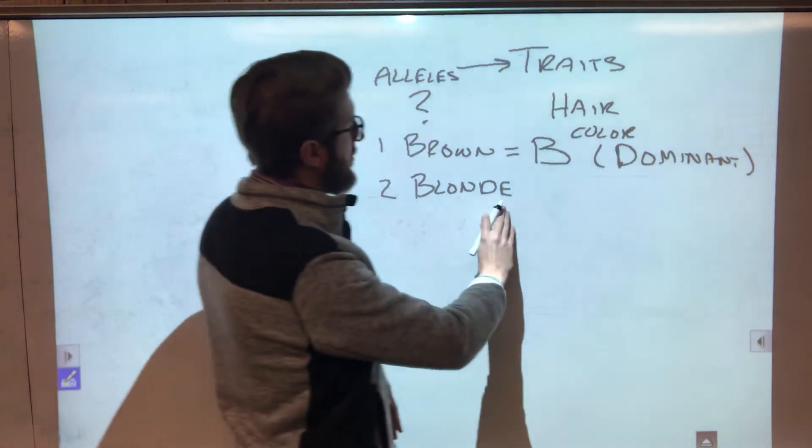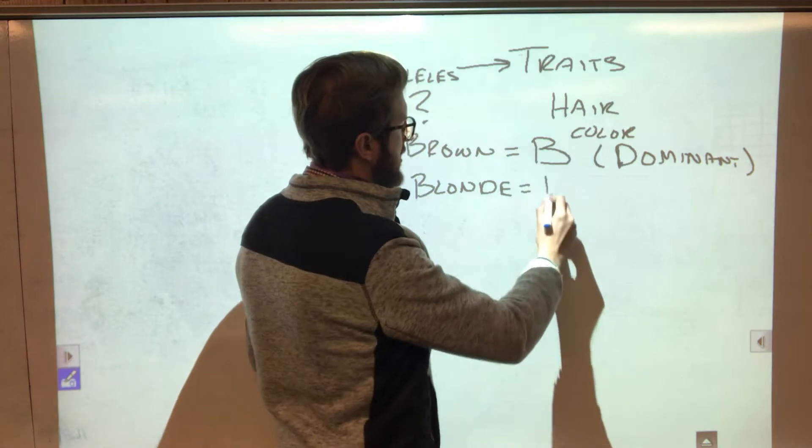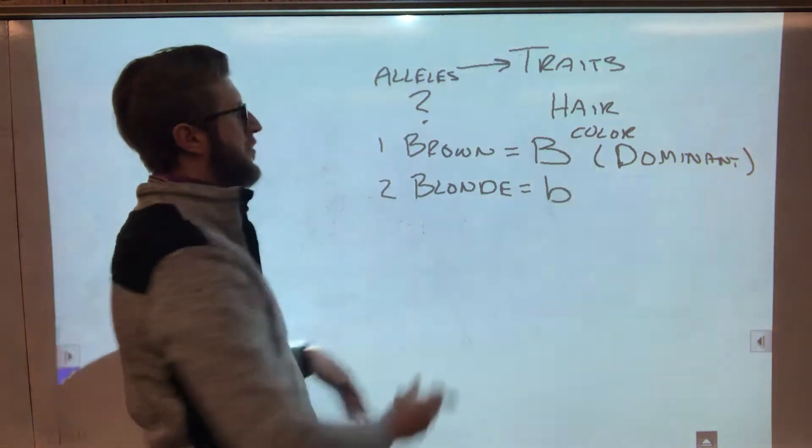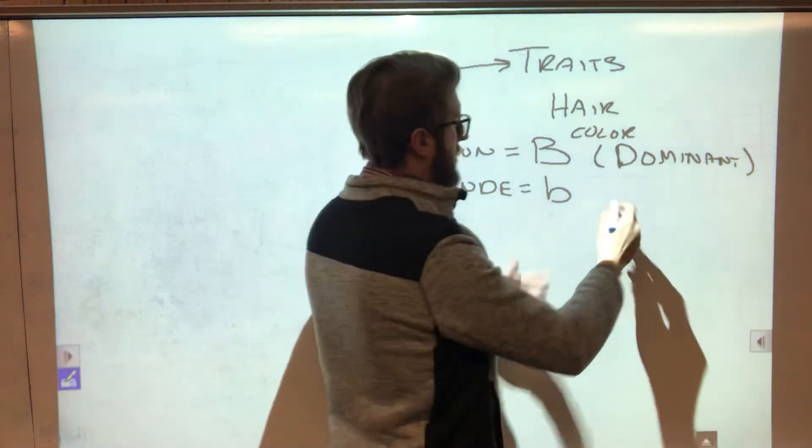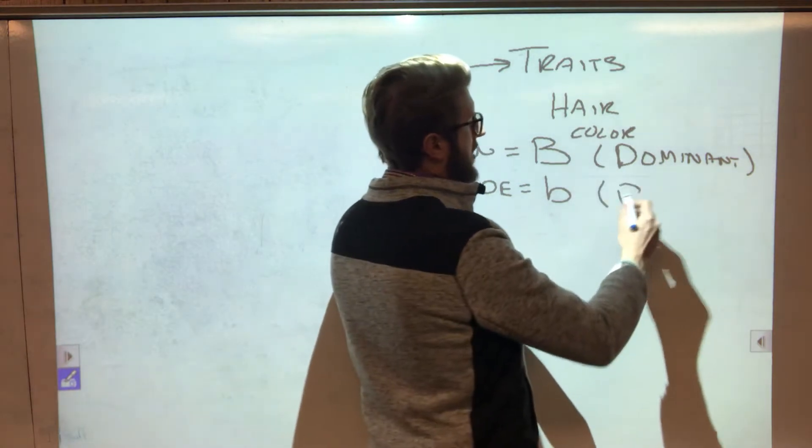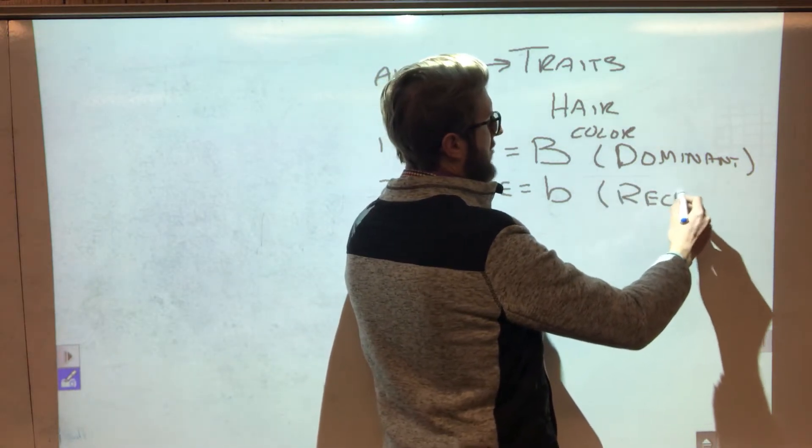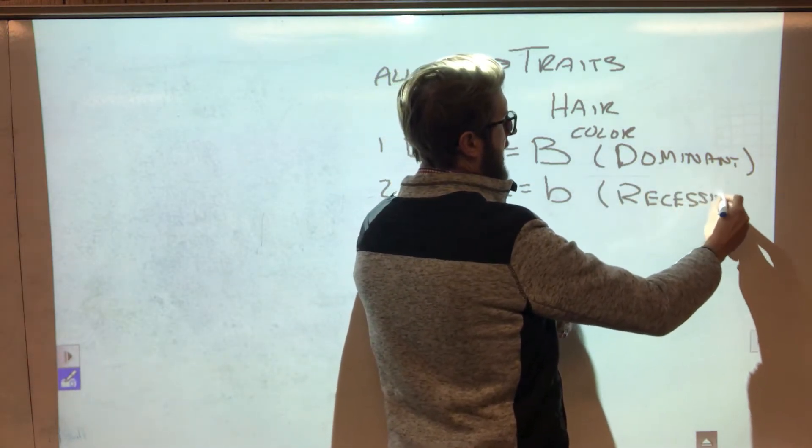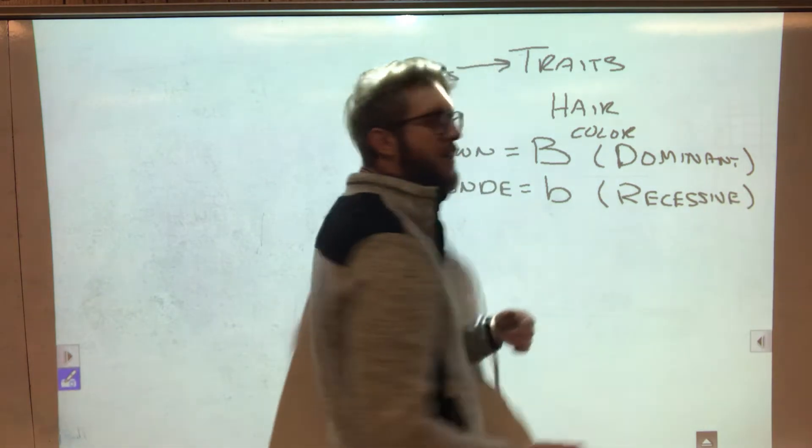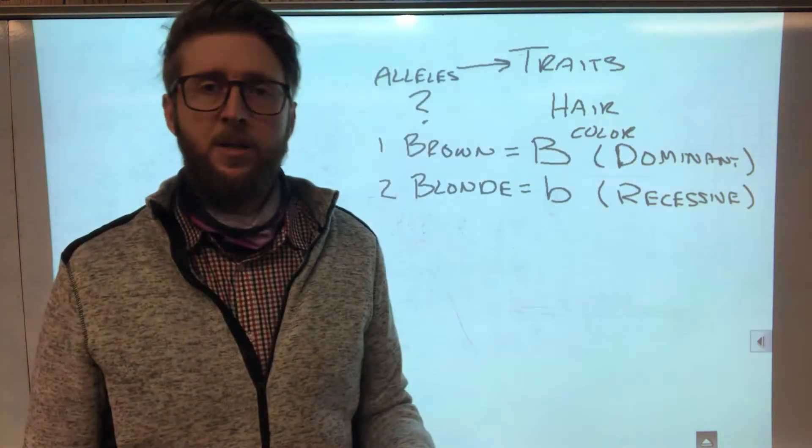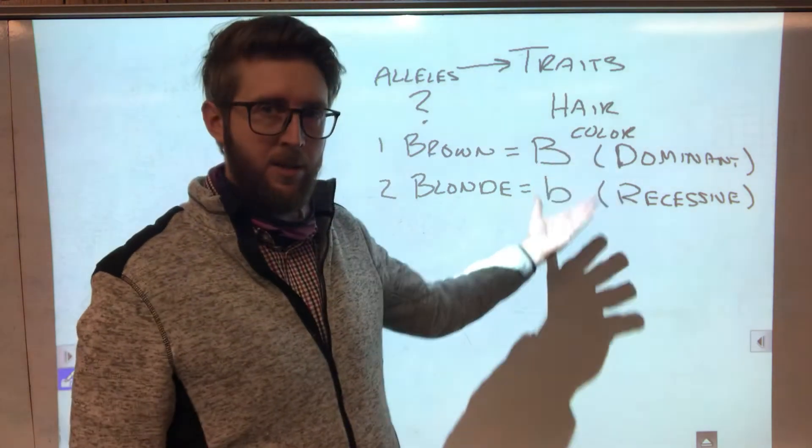Okay blonde, let's say blonde is little b. Let's call blonde little b. Why is it lowercase? Because we use lowercase to signify that it is recessive. Meaning it's not dominant. Okay so it can be dominated by the dominant allele.